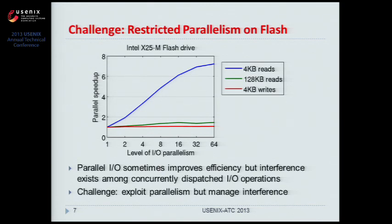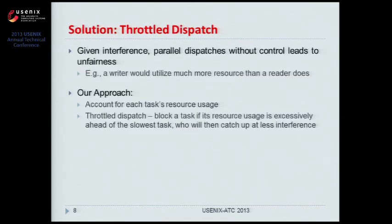This raises a challenge: we must exploit parallelism but also manage the interference that comes with it. Given interference between concurrently dispatched requests, parallel dispatches without careful control will lead to unfairness — a writer would utilize more resources than a reader if issued in parallel without scheduler control. Our approach accounts for each task's resource usage through virtual time, and we add a throttle dispatch mechanism that blocks a task if its resource usage is excessively ahead of the slowest active task, allowing slower tasks to catch up.